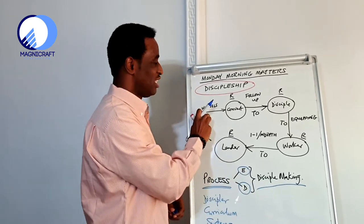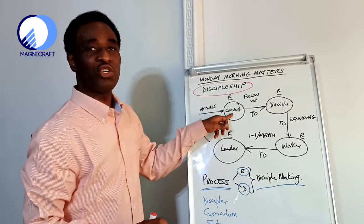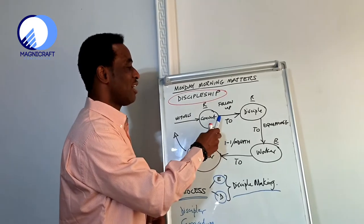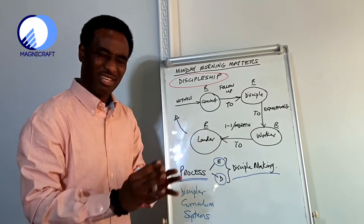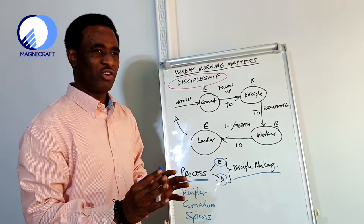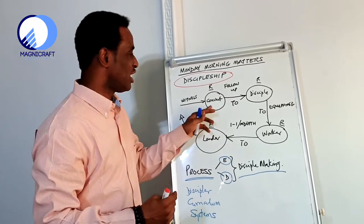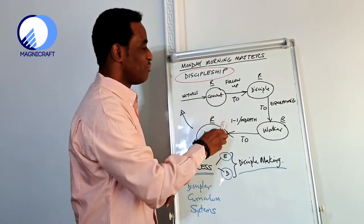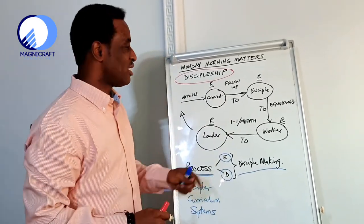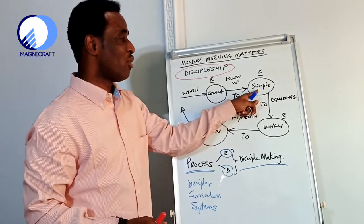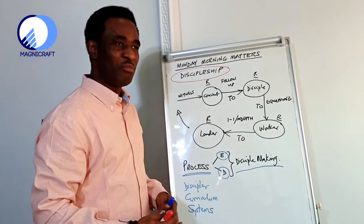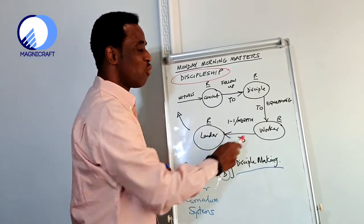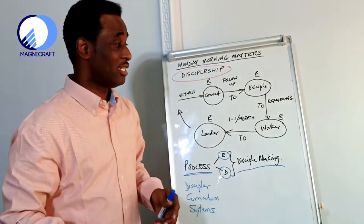So it starts with evangelism, witnessing to souls. You get them, the result is that you get them converted. You get a convert. And then from convert, you will now take them to some training objectives. It has its own curriculum. You can look at what are the things you need to get a convert so that I can be able to get a disciple at the end of the day. Follow-up is based on the training objectives. From the convert, you get a disciple. The result is a disciple. From discipleship, you get to equip them to go out, to make the impact that they need. And from being equipped, they become workers, maybe volunteers or workers in the house of God.